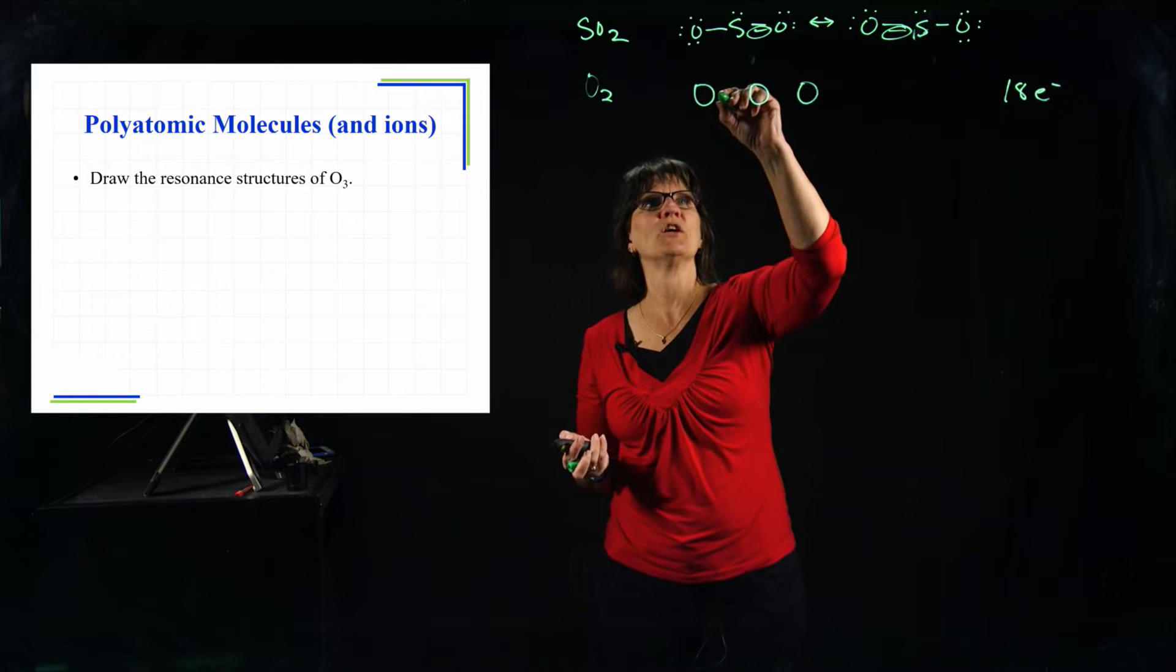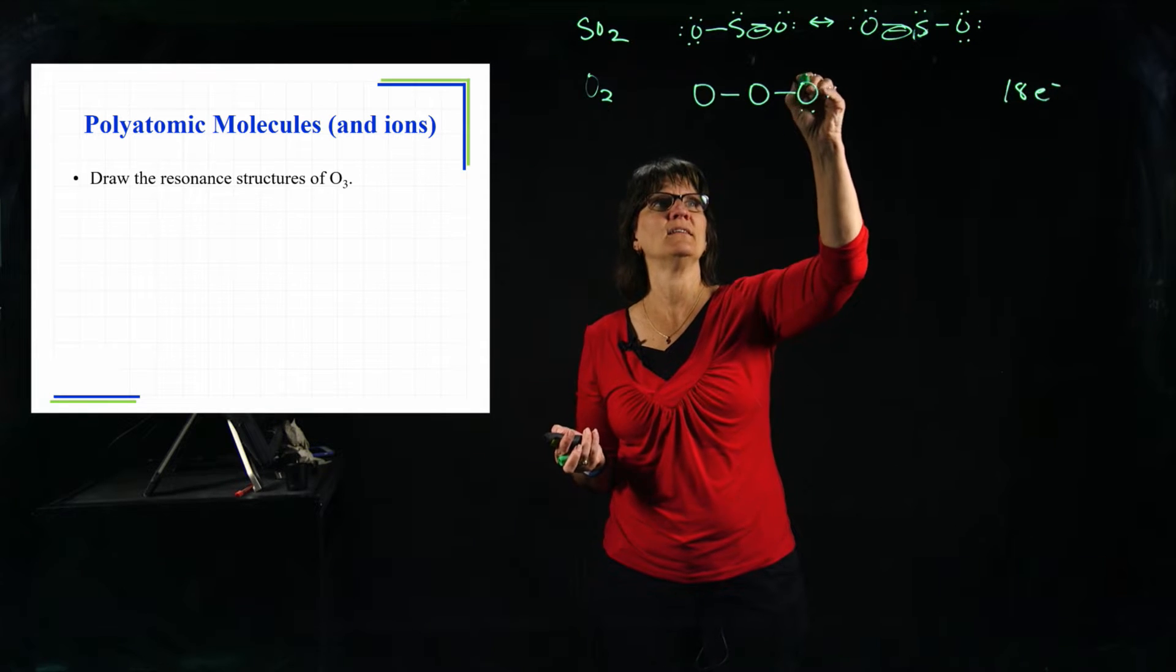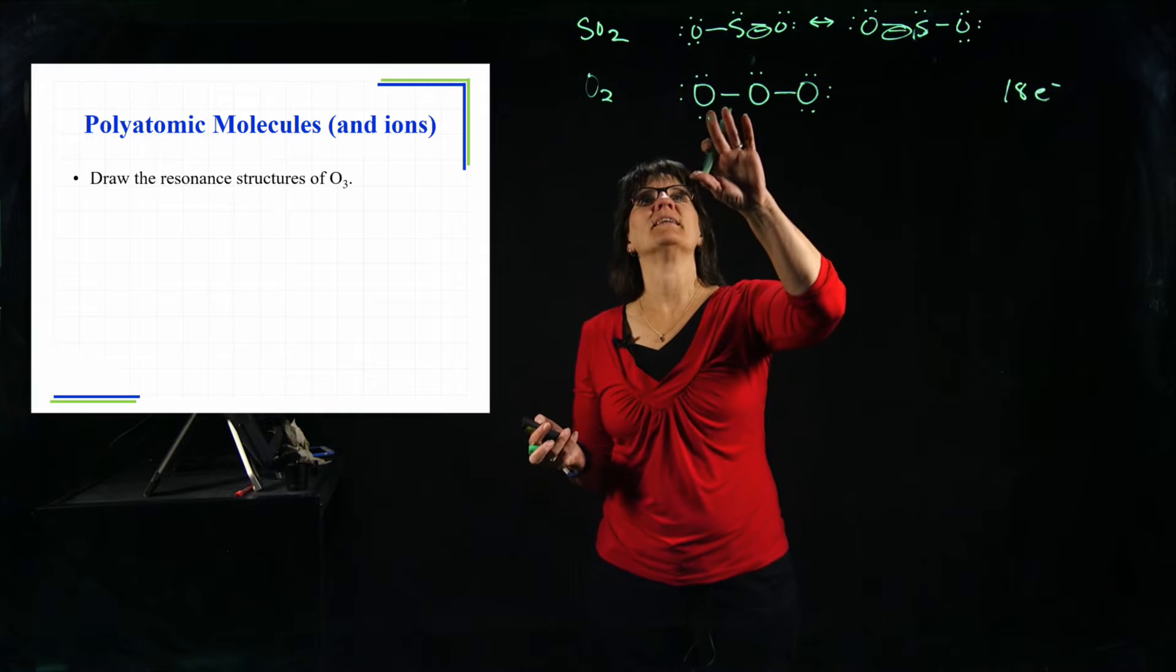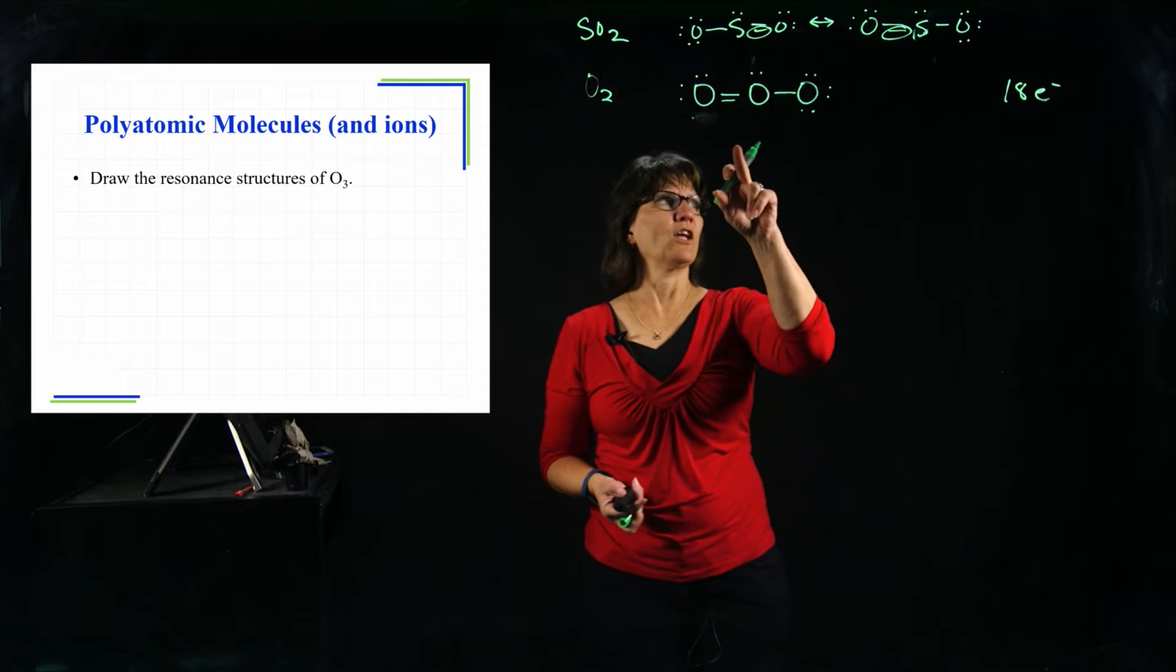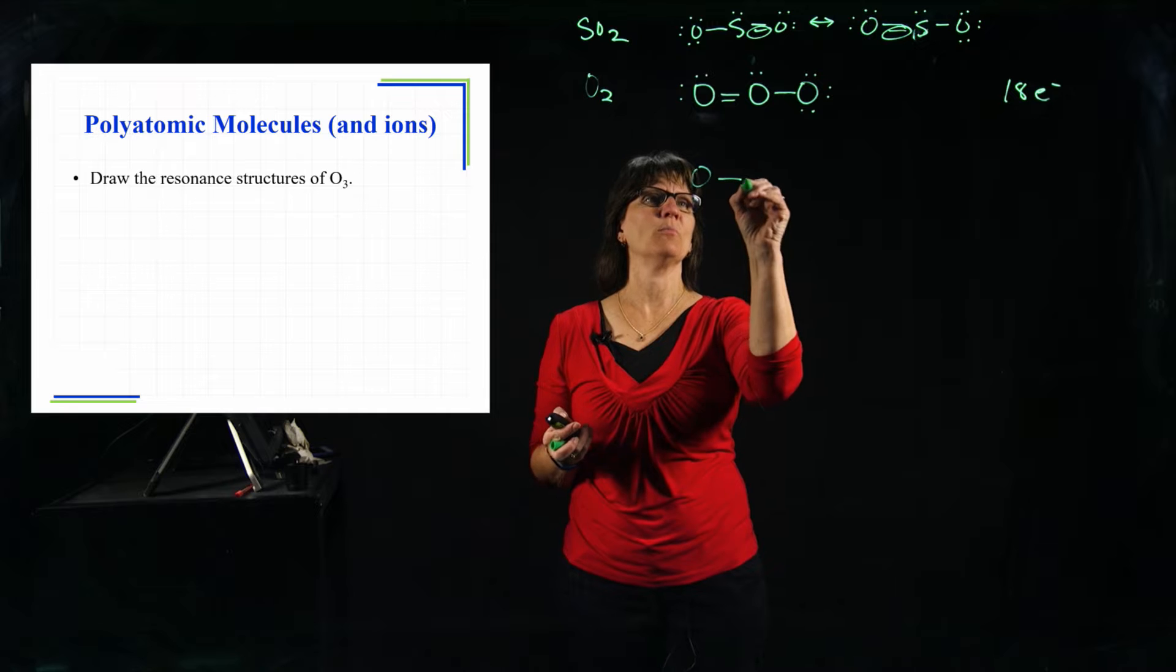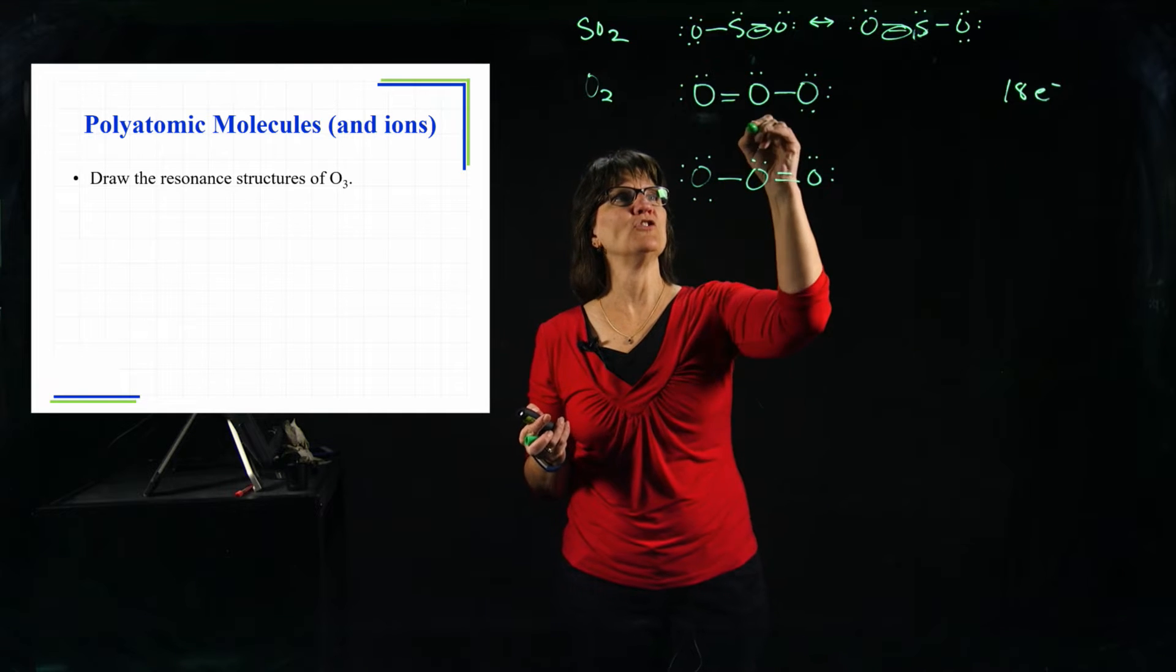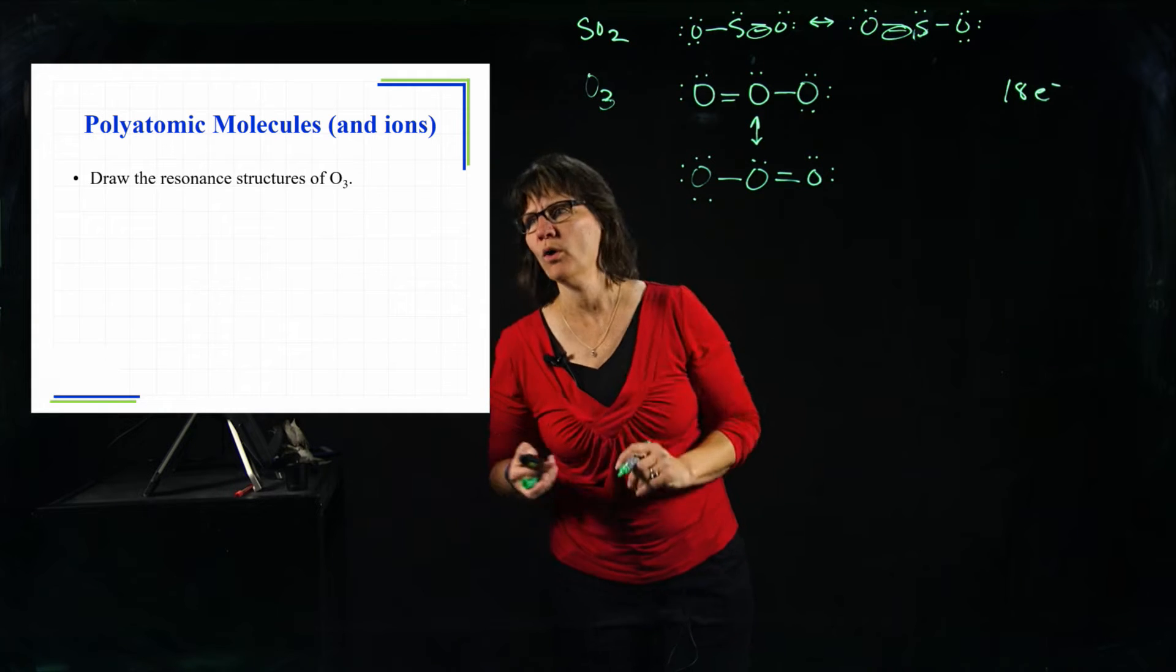We were following our rules, we'd start with single bonds, two, four, go to the outside and do six, eight, ten, twelve, fourteen, sixteen, eighteen. I have to stop and then I know that I can take these two and shift them in and make my central oxygen happy. Now if I can do it like this, I can also do its resonance structure, which would be the single bond here and the double bond here. Same exact structure, it looks like it's just flipped, but we know these two together depict the full molecule of O3, ozone.